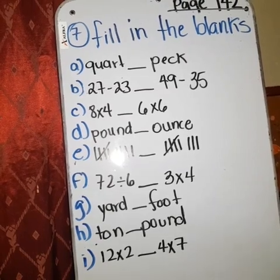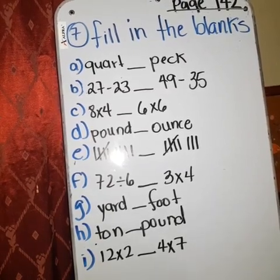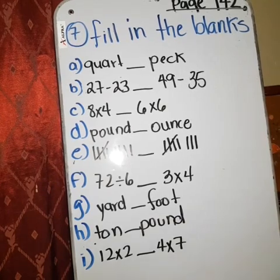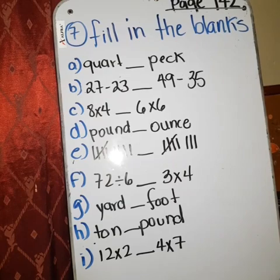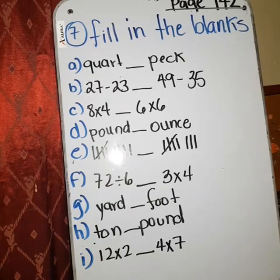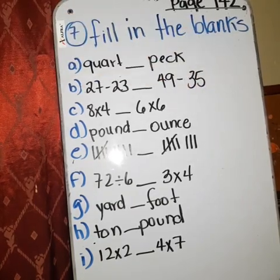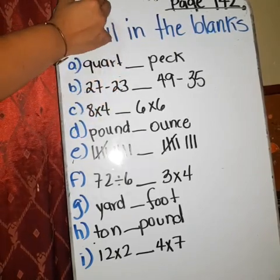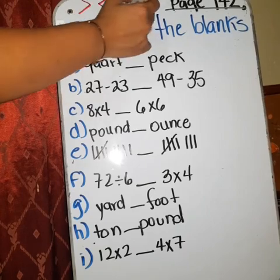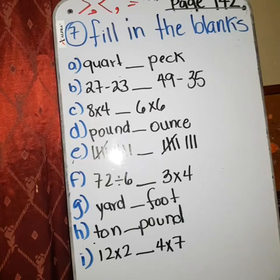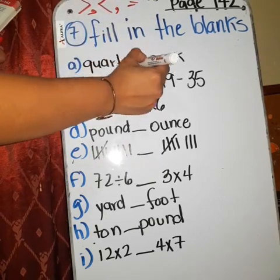And the last exercise is exercise seven. It's the same page, page one hundred forty-two. Okay, what you're going to do, fill in the blank. That is greater than, less than, or equal. Okay, we have first. Yo lo puse hacia abajo porque no me cabe, la pizarra no me cabe. Entonces lo hice hacia abajo. Quart is greater than or less than. Greater than is this. Less than is this. Equal. Tenemos que poner cualquiera de esos tres. Quart is greater than or less than peck. Is less than peck.